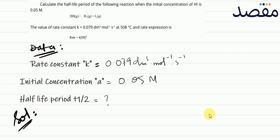If I talk about the value of the rate constant k, rate constant k, value 0.079 decimeter cube mol inverse second inverse. I have the rate constant value in your question given. And this temperature is 508 degree centigrade temperature.